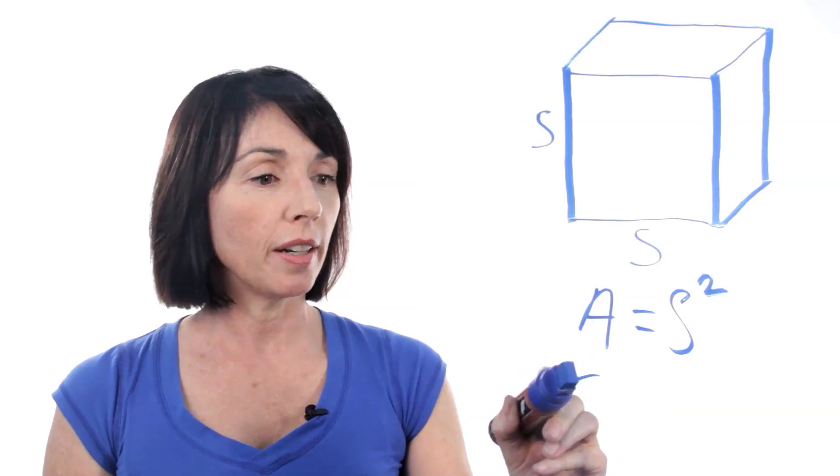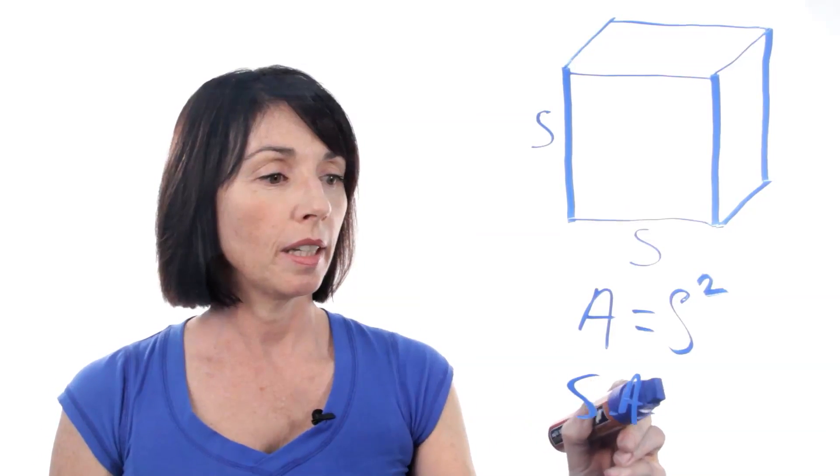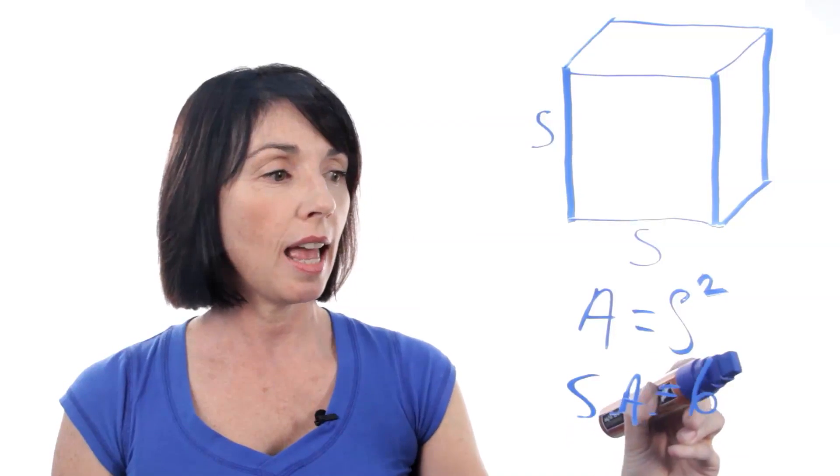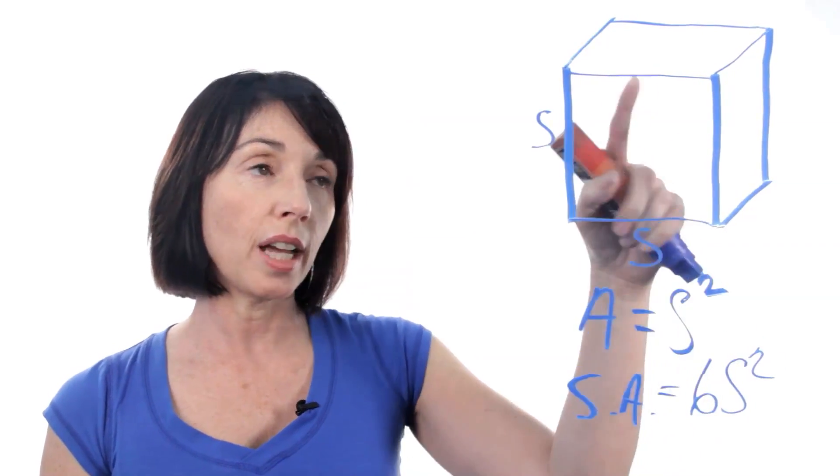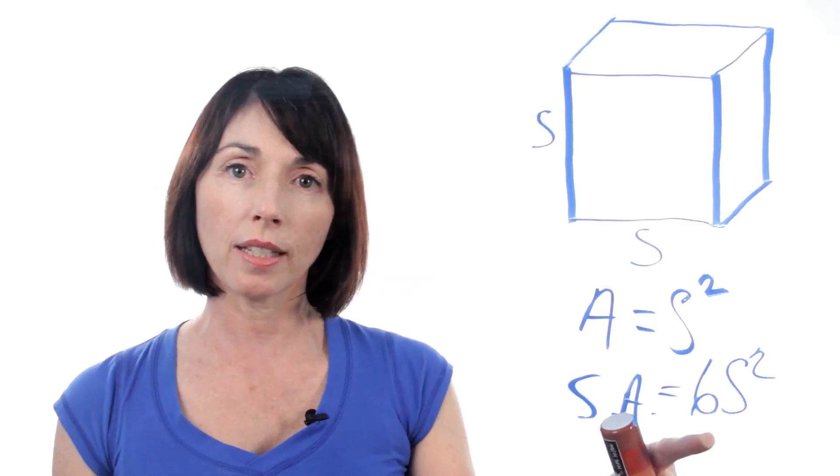So, the surface area is just equal to 6S squared. S squared is the area of one face, and there are six faces.